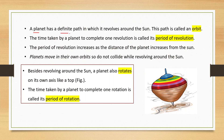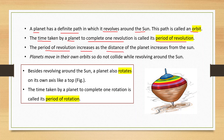A planet has a definite path in which it revolves around the sun. This path is called an orbit. The time taken by a planet to complete one revolution is called its period of revolution. The period of revolution increases as the distance of the planet increases from the sun. Planets move in their own orbits so they do not collide while revolving around the sun.